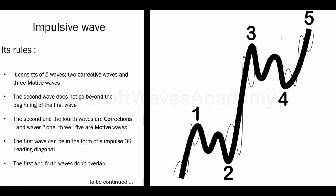The third rule, which I already mentioned, is that Wave 2 and Wave 4 are corrections, and Wave 1, 3, and 5 are motive waves. Wave 2 can be in certain corrections and Wave 4 can also be in certain corrections. When we study the laws of corrections, we'll know which pattern emerges in Wave 2 and which pattern emerges in Wave 4.